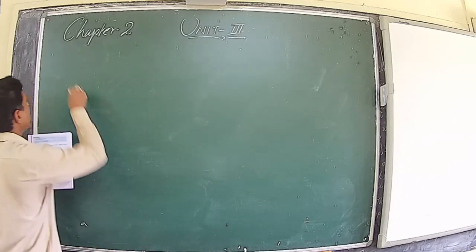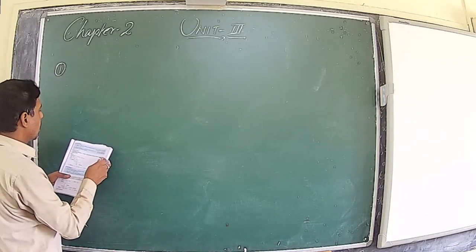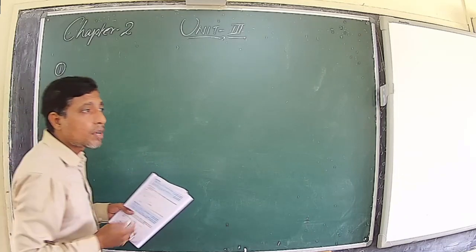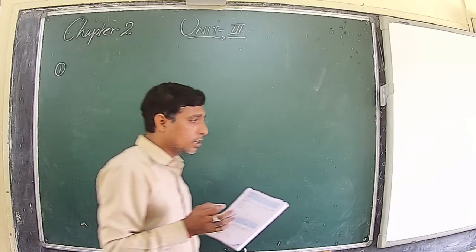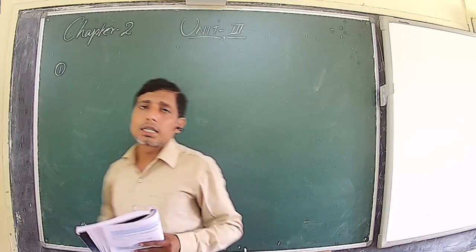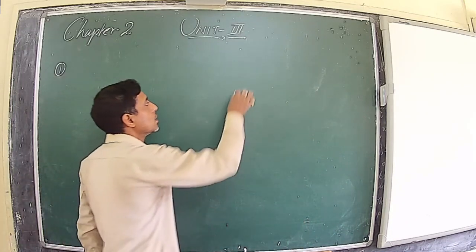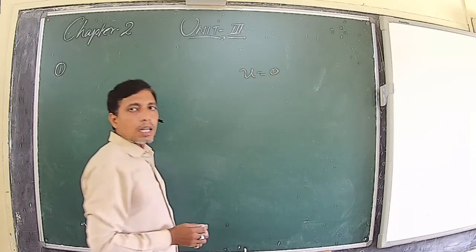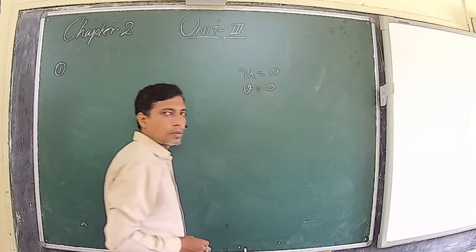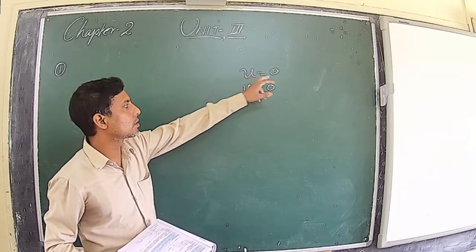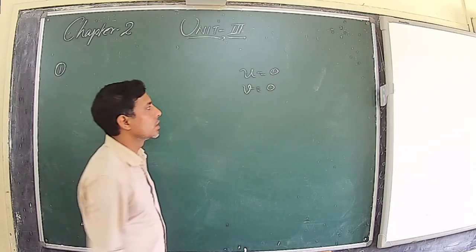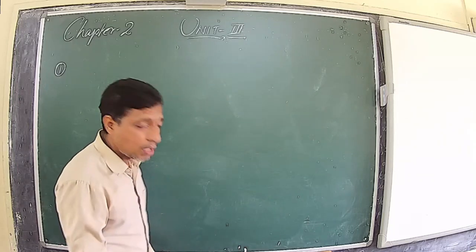Let us practice a numerical example. Before solving, remember two important things: if a body is starting from rest, then initial velocity u = 0; and if a body finally comes to rest, then final velocity v = 0. Keep these two things in mind as we go ahead with the numerical.